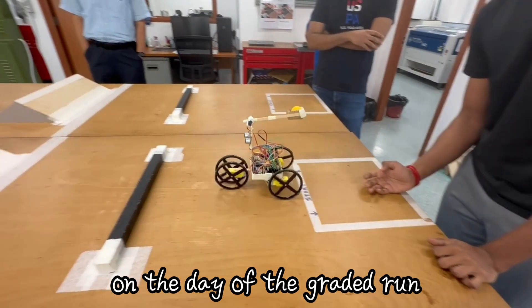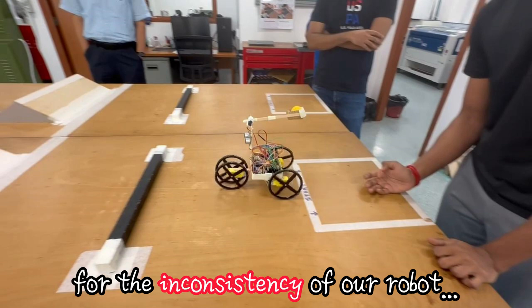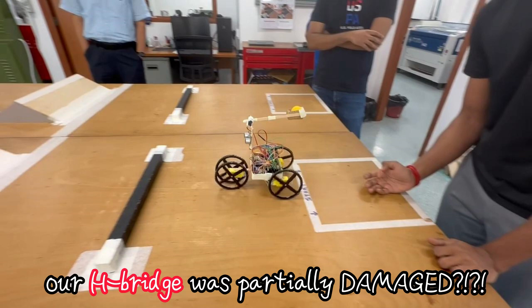So on the day of the graded run, we finally found the cause for the inconsistency of our robot. Our H-bridge was partially damaged.